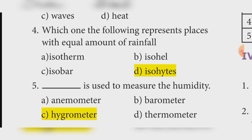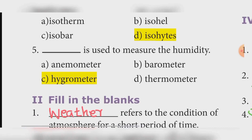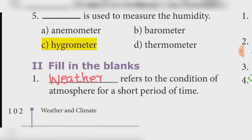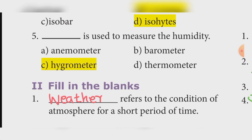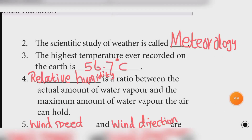Fifth question: What is used to measure humidity? Answer: Option C — Hygrometer. Fill in the blanks. First: Weather refers to the condition of the atmosphere for a short period of time. Second: The scientific study of weather is called Meteorology.